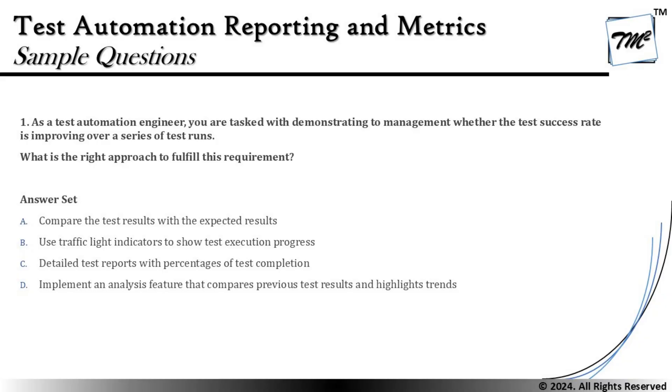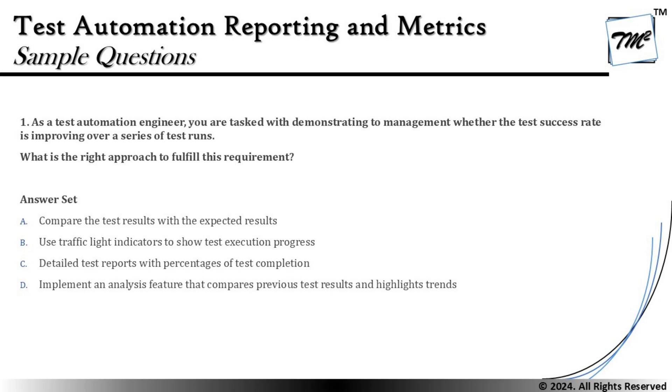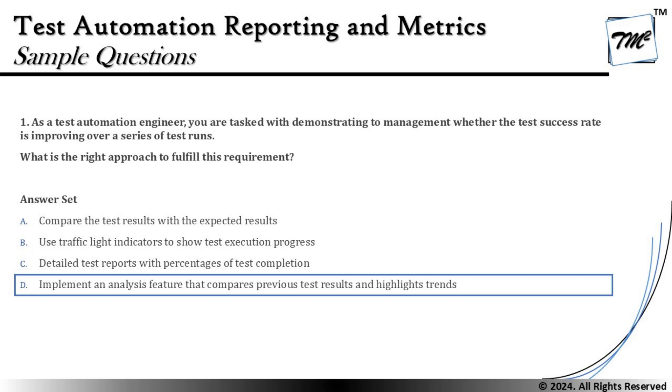Option D says: implement an analysis feature that compares previous test results and highlights the trend. This makes a lot of sense because it is exactly what we have been looking for. The analysis feature is able to compare the pass rate of previous test run cycles with the latest and plot a trend graph, which would be meaningful to the stakeholders. Therefore, the right answer is D — implement an analysis feature that compares previous test results and highlights the trends.